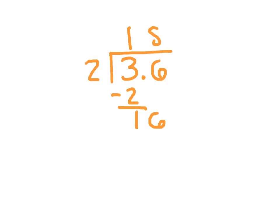16 divided by 2 is 8, because 8 times 2 is 16. I'm ignoring the decimal point for now. 16 minus 16 is 0.